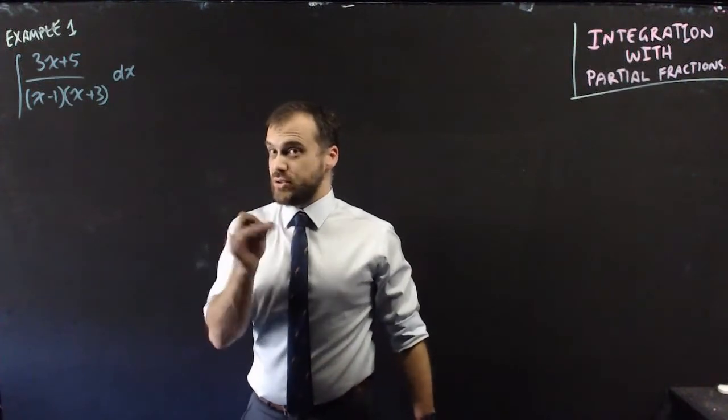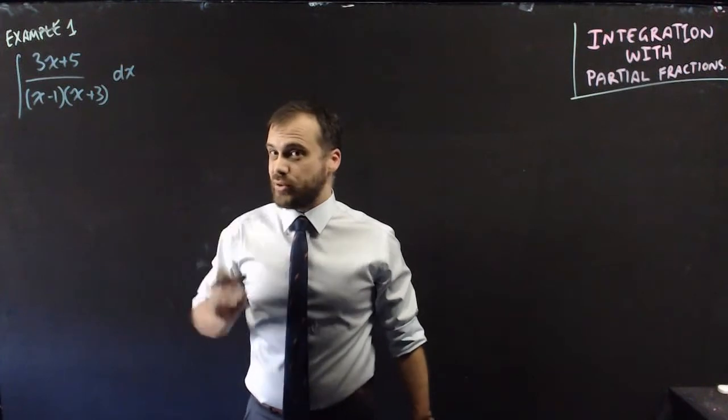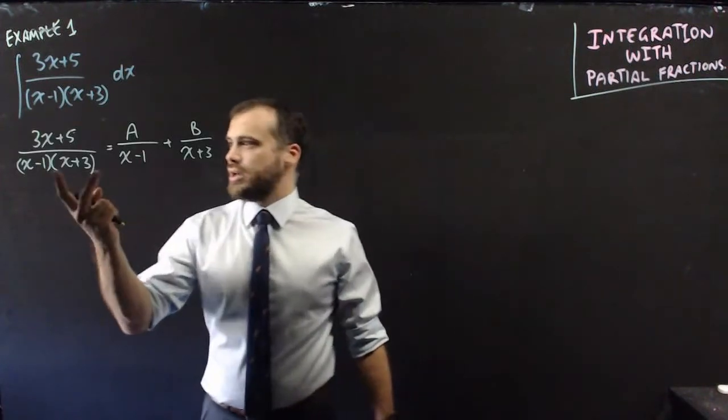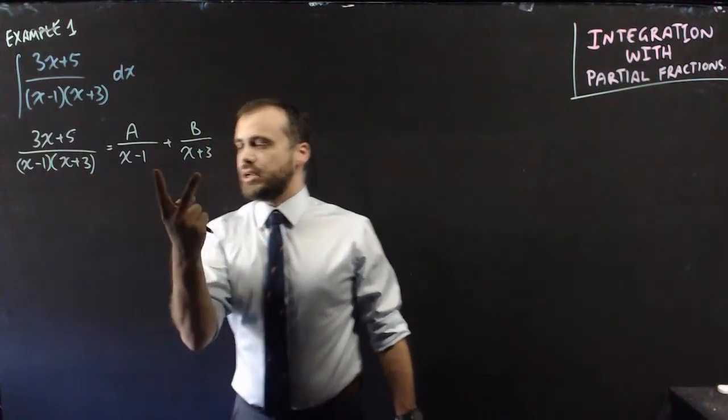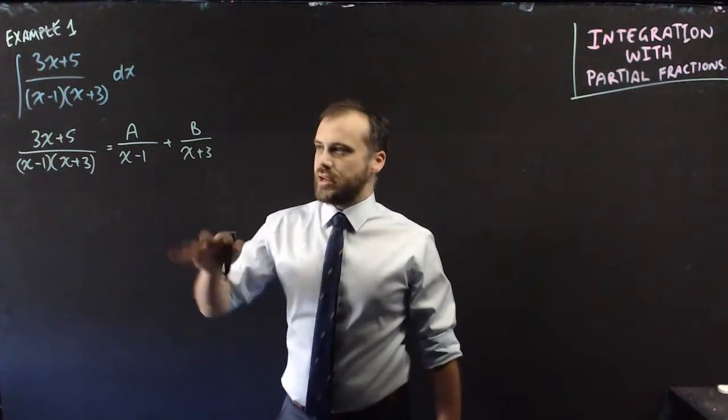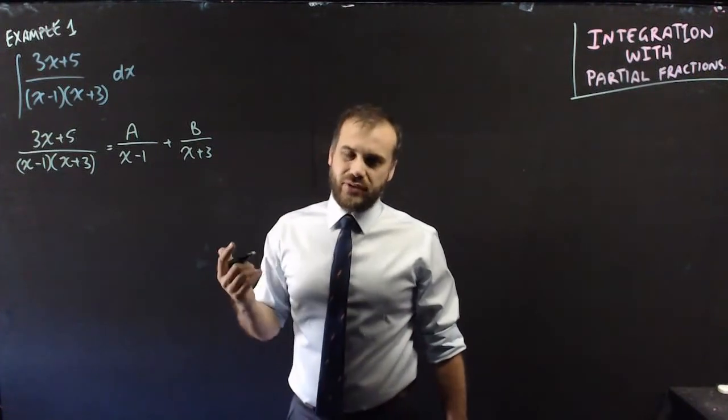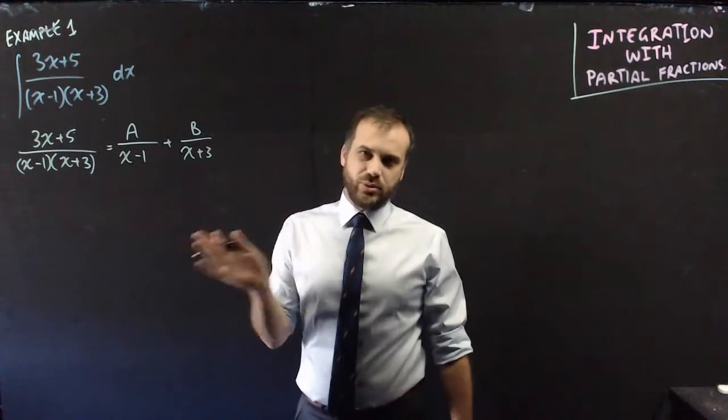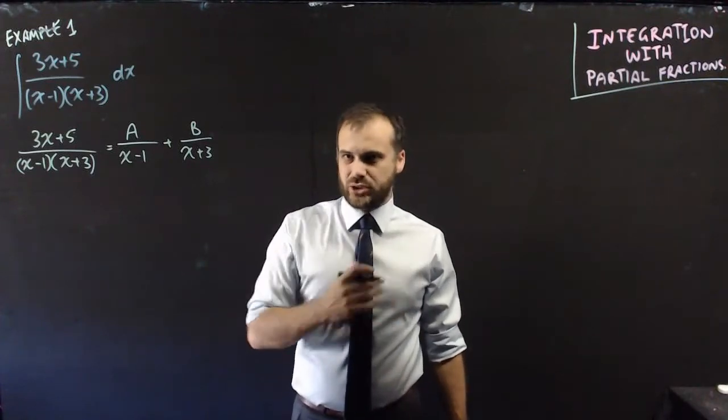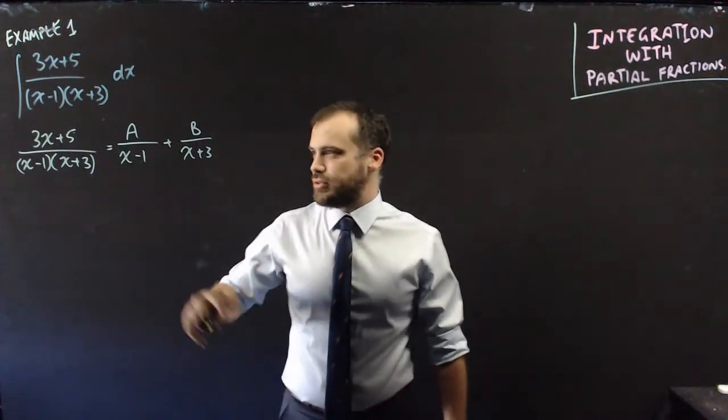We're going to have to do that before we even consider the integration step at all. So again, not integrating here. I've just taken this and split it up into a over that and b over that, and then I need to figure out what the a and b values are. I'm not going to explain that. You can watch a previous video to figure out how to do partial fractions, but I'll just speed through it.